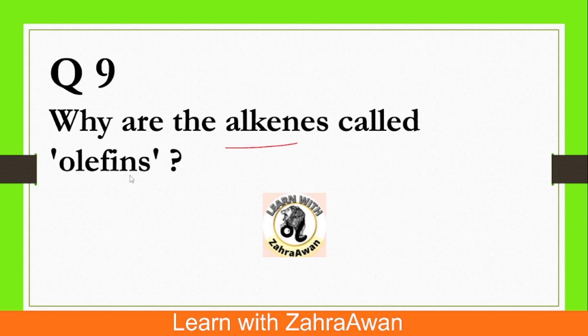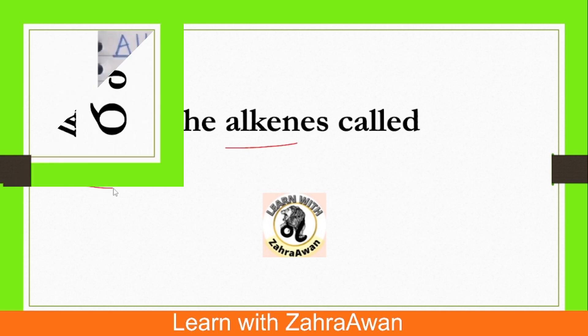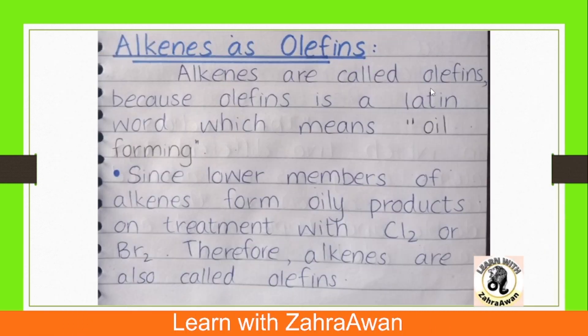Question number 9: Why are alkenes called olefins? 'Olefin' is a Latin word which means 'oil forming.' Alkenes, when treated with bromine water, produce an oily liquid. This is why alkenes are called olefins — meaning oil forming.